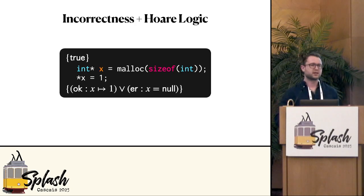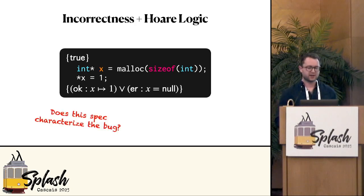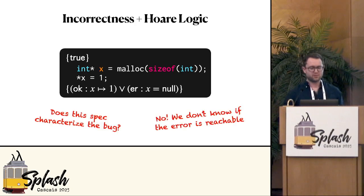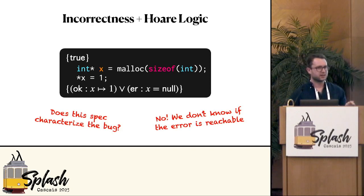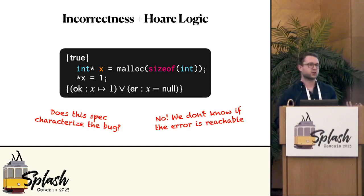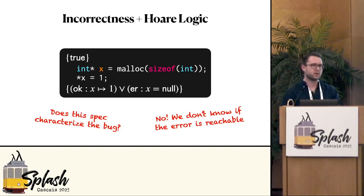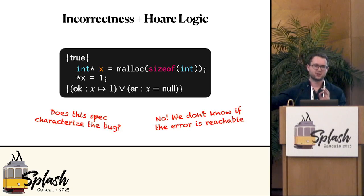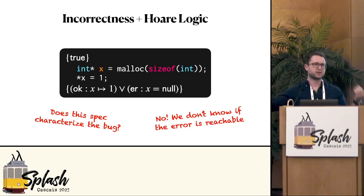The question is: does this actually characterize the bug? The answer is no, because this disjunction isn't really expressive enough to tell us that the error can actually happen. It's possible that all of the program traces are going to fall into the first disjunct and the error is not actually realized by a real execution.